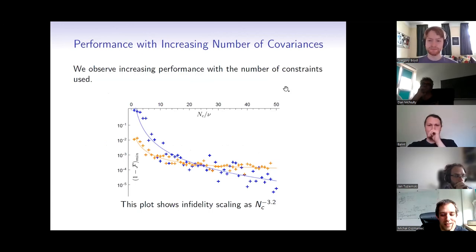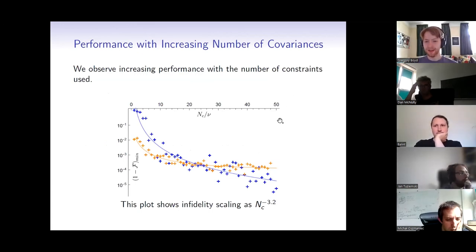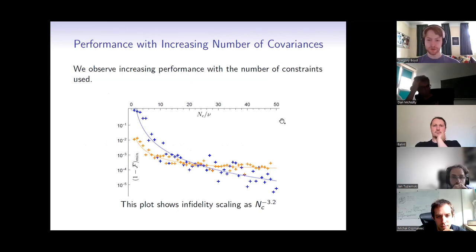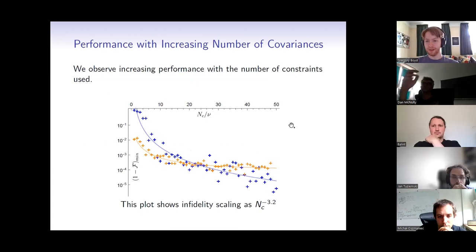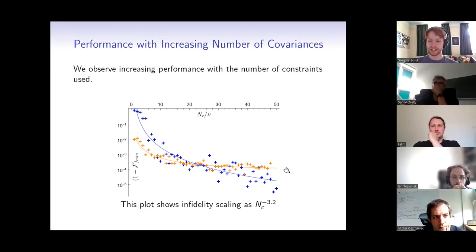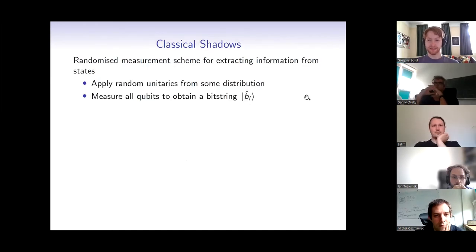On the right side of this graph we're using a number of covariances approaching 10,000, because Nu here is the number of parameters, which is on the order of a hundred. So on the right side of the graph, there are on the order of 10,000 or more covariances. Does that mean you multiply the number of shots by that number? The answer is no — this is where we can use classical shadows to alleviate this potentially prohibitive cost.